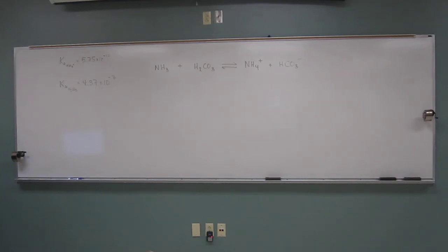Okay, so let's do one of these acid-base reactions, another one. It says, given that Ka for the ammonium ion is 5.75 times 10 to the negative 10th, and the Ka for carbonic acid, H2CO3, is 4.37 times 10 to the negative 7th, calculate the Keq and predict the position of the equilibrium in the following acid-base reaction. Please explain for full credit.